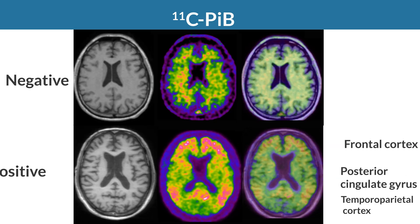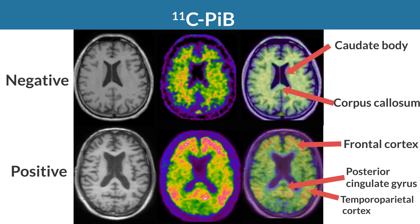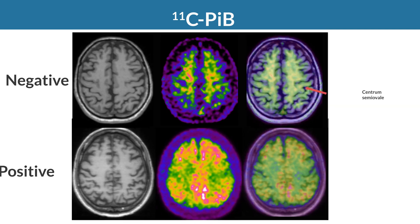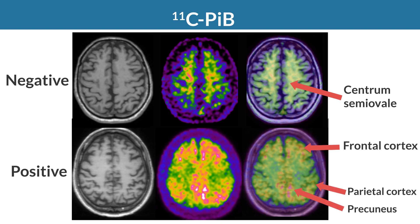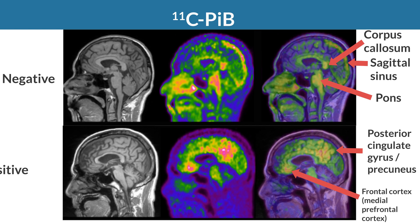At the lateral ventricular body level, posterior cingulate gyrus shows high accumulation in a positive case. At the centrum semiovale level, precuneus and parietal cortex show high accumulation in a positive case, while the pericentral sulcus area shows relatively low accumulation. In a mid-sagittal section, high accumulation is observed in medial frontal cortex and posterior cingulate gyrus and precuneus in a positive case.